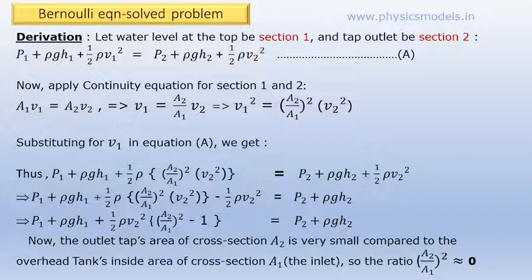Now, we substitute this into the equation A and we get rid of the term v1 squared. I have explained step by step how the derivation happens and in the end you will get P1 + ρgh1 + ½ρv2²{(A2/A1)² - 1} = P2 + ρgh2.